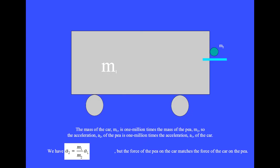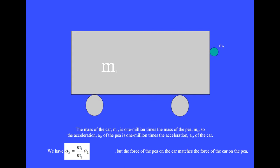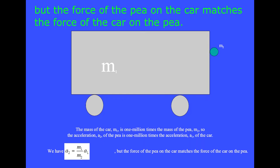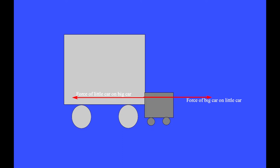Someone has thrown a small object into the path of the car, causing the two to collide. The mass of the car, M1, is one million times the mass of the small object, M2. So the acceleration of the small object is one million times the acceleration of the car. We have A2 equals the ratio M1 over M2 times A1. But the force of the small object on the car matches the force of the car on the small object. When the big car collides with the little car, the force of each car on the other matches.